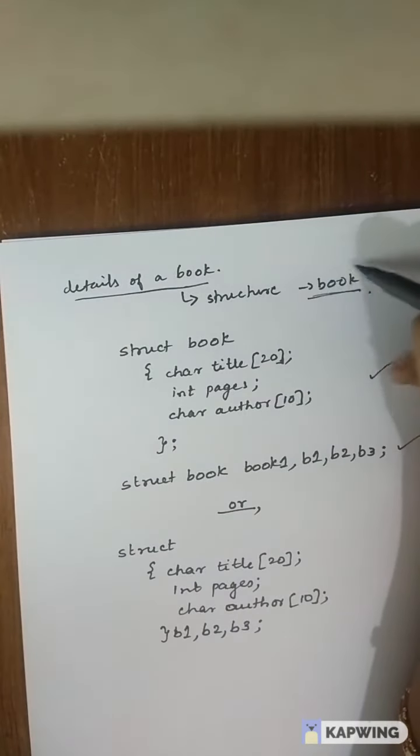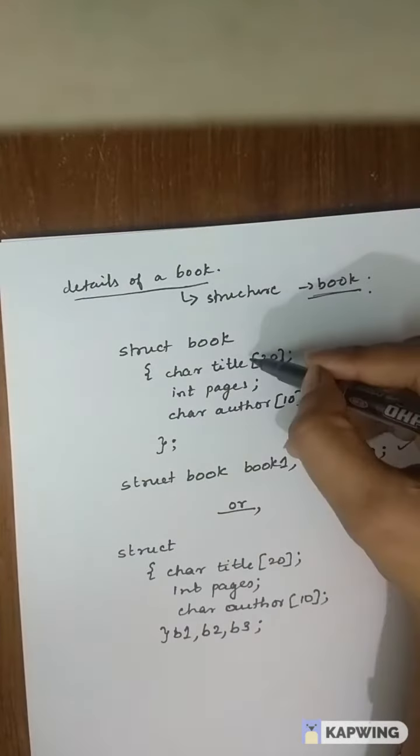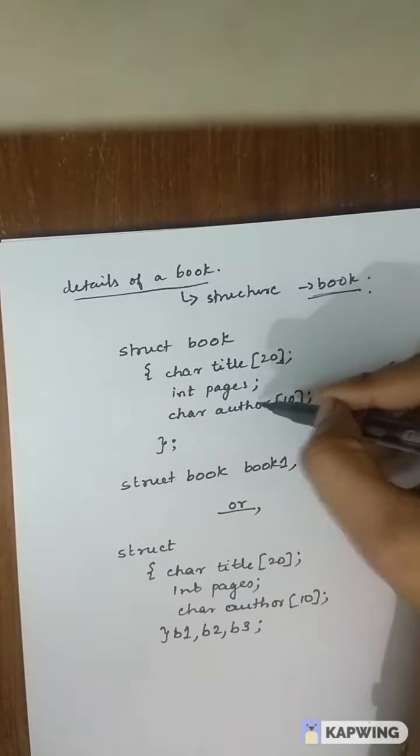And what are there inside a book or what all details I can group under the book. Suppose I need the title, number of pages and the author name.